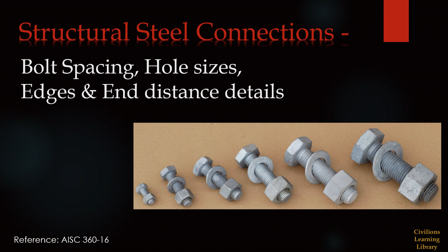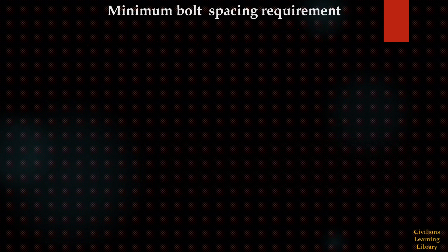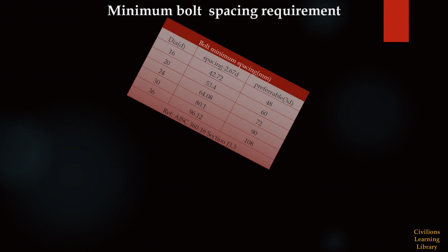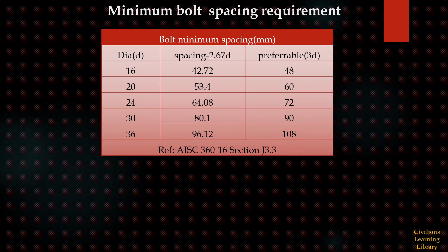Hi everyone, welcome to the topic: connection bolt spacing, hole sizes, edge and end distance details. Minimum bolt spacing requirements are based on AISC 360. As per the codal requirement, minimum bolt spacing is 2.67d, and it is advised to keep 3d as the preferable bolt spacing distance.